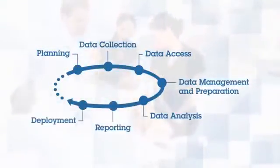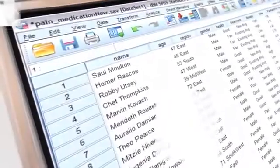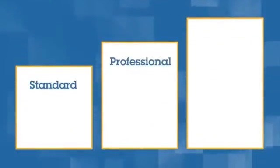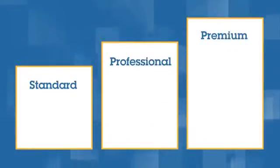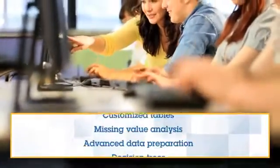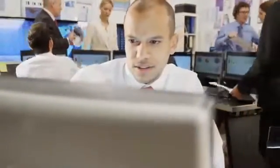from planning all the way to deployment. IBM SPSS Statistics is available in three specialized editions: Standard, Professional, and Premium. By grouping essential capabilities, these editions provide an efficient way to ensure that your organization has the analytical features and functionality they need.